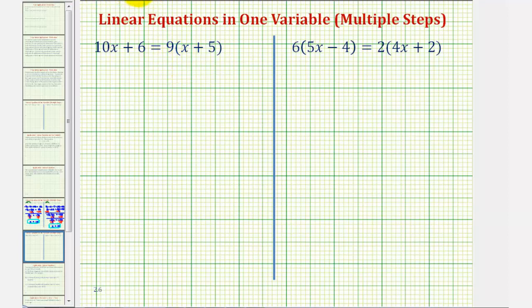So looking at our first equation, we want to eliminate the parentheses on the right side by distributing positive nine. Notice we cannot simplify the left side because these are not like terms. So we have 10x + 6 = 9 times x would be 9x and 9 times 5 is 45, so plus 45.